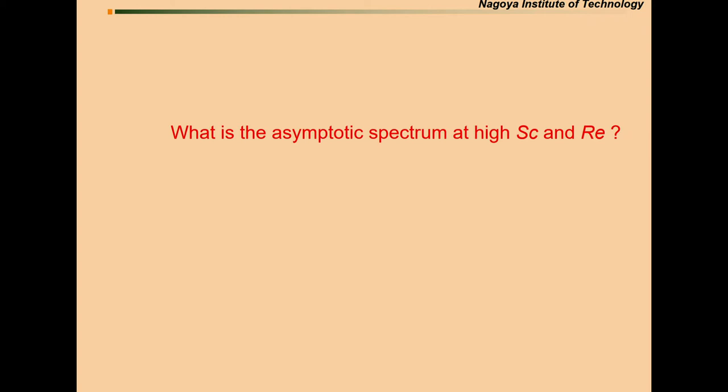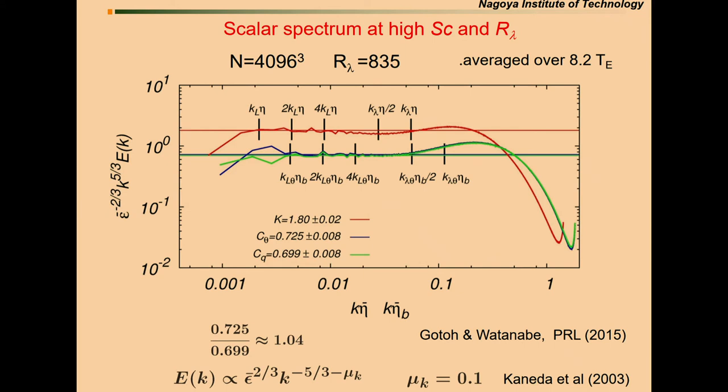To proceed further, we do the theoretical analysis with the help of DNS data for the rate of strain tensor. For this purpose, we use the DNS data, Reynolds number around 835. Our turbulence has a spectra like this one. There exists some inertial range. Then, this blue and green curve, the passive scalar spectra, but the Schmidt number is 0.7. But we do not use this data. We just use the data of the velocity field.